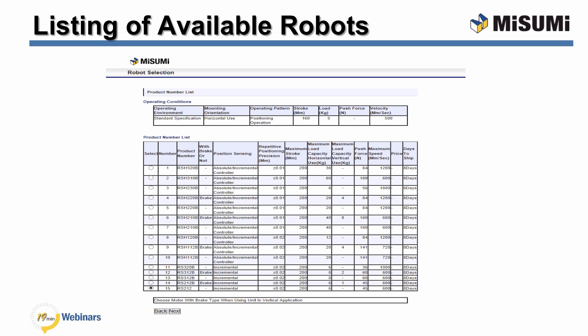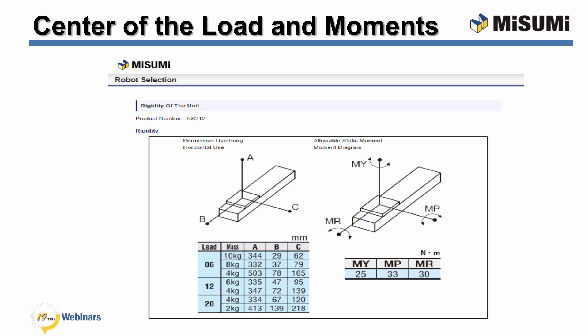The software provides a listing of the robots that meet the basic requirements of your application. You then confirm that the location of the center of the load will be within the permissible overhang and the allowable static moments for the robot. This is done by confirming that the center of gravity of the workload is within the area outlined by the box created by lines A, B, and C for the load you plan to move. The dimensions of this box differ for each type of robot and configuration.